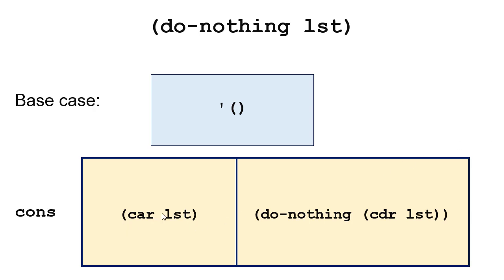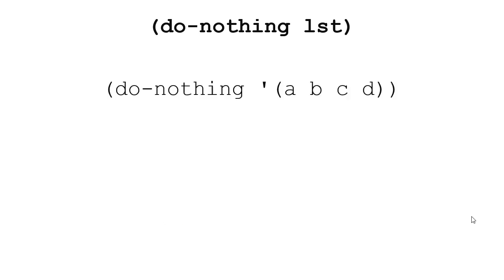Otherwise, we're going to cons the car of the list back onto doing nothing with the cdr of the list. So we make a recursive call on the cdr. Since we're not doing anything to the list, this should return the cdr, and we're going to cons the car with the cdr, which gives us our original list. It doesn't do anything, but that's the point — I want to show you the general structure. All we have to do is modify one of these pieces: either what we do to combine the car and cdr together, or perhaps we do something with the car before combining.